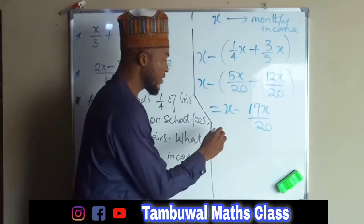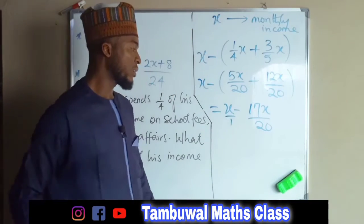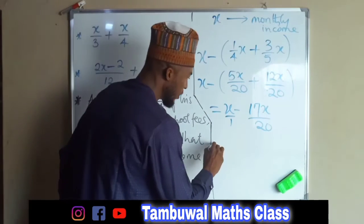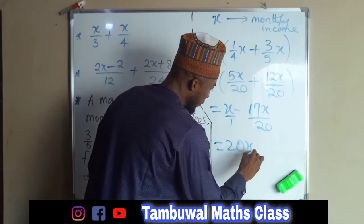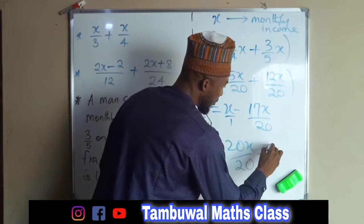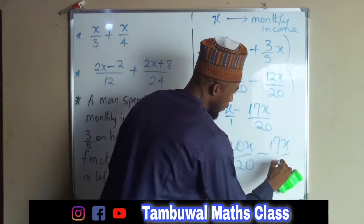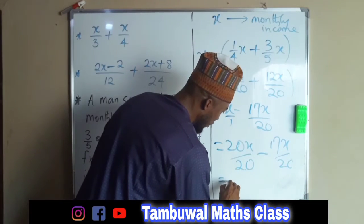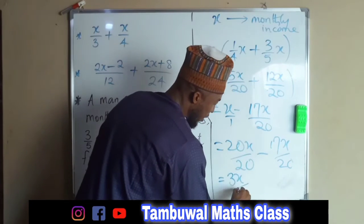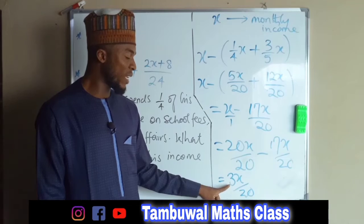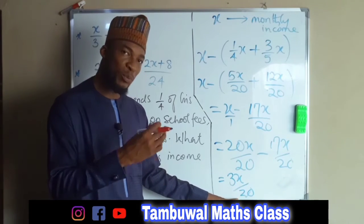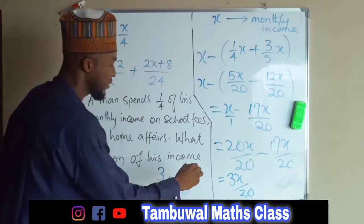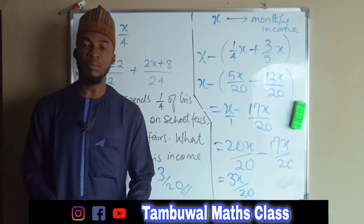We rationalize by multiplying numerator and denominator by 20 so that we have a common denominator: 20x over 20 minus 17x over 20. Then 20x minus 17x is 3x over 20. Therefore, 3 over 20 of his total monthly income is left.